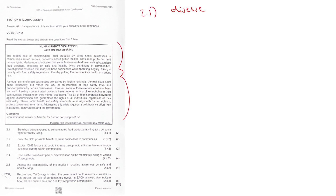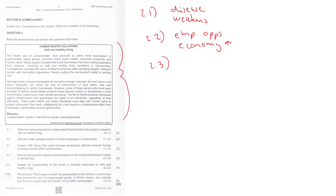Foodborne diseases — it weakens your immune system as well. 2.2, describe one possible benefit of small businesses to communities — there's just employment opportunities available, and the circular flow of money is moving. There's more income in the economy, so the economy is going to grow. 2.3, explain one factor that could increase xenophobic attitudes toward foreign business owners within communities — a huge issue in South Africa. People believe that foreigners are stealing jobs, which in South Africa is definitely not the case, and there are stereotypes believing that foreigners are here to cause trouble.